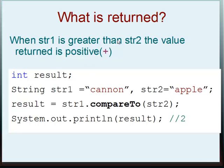Similar here. When string1 is greater than string2, the value returned is positive. Once again, you have int result. String1 here is cannon, String2 here is apple. And then we have string1.compareTo(string2). And the result is printed out here, and the result is two. Cannon is six letters and apple is five letters, so cannon is longer.